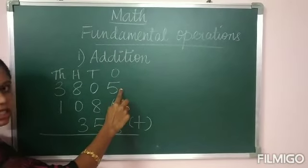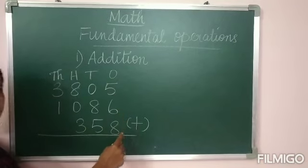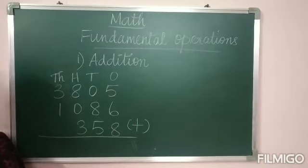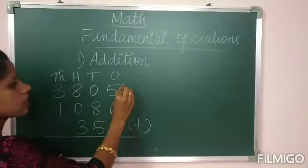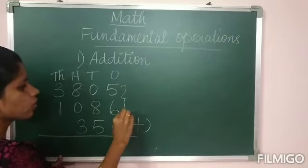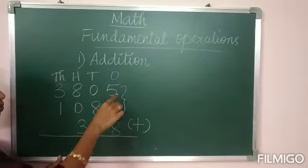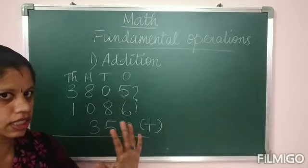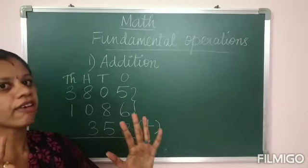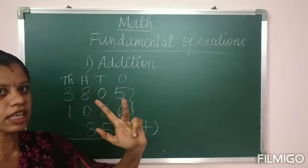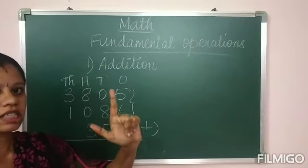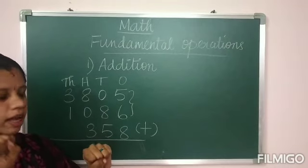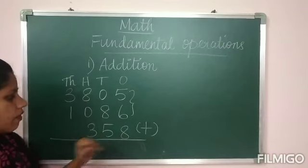5 is the last digit here, then 6 and 8. First add 5 plus 6: keep 5 in the mind, count 6 on the fingers — 6, 7, 8, 9, 10, 11. So 5 plus 6 equals 11.